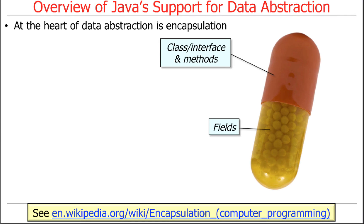In Java, encapsulation is typically done through public and private access modifiers — there are others like protected that we'll talk about later. Using a time-release capsule as a metaphor: we have the interface — the coating on the outside — like the class and interface and methods. That's the part that's visible. Inside does the work but you don't see it, and those are the fields that store the data.